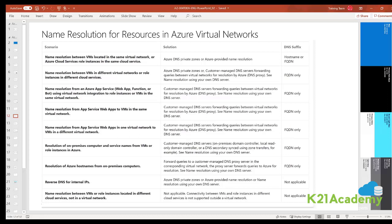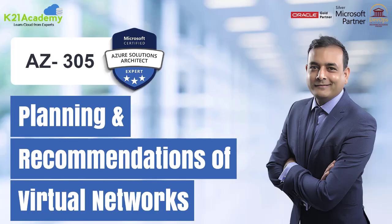For name resolution from an Azure App Service (web app or function) using virtual network integration to VMs in the same virtual network, you must use customer-managed DNS servers forwarding queries between virtual networks. Similarly, for web apps to VMs in the same virtual network, use your own DNS for forwarding. For App Service web apps in one virtual network to VMs in another virtual network, you also need customer-managed DNS. So for most scenarios involving different VNets, you need your own DNS. Azure private zones can be used when VMs are in different VNets and you need communication between them.